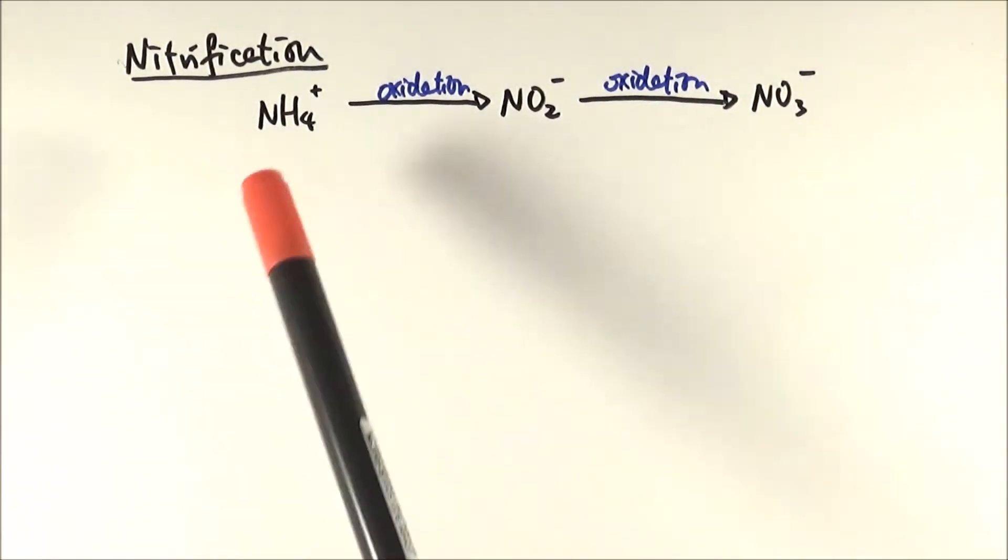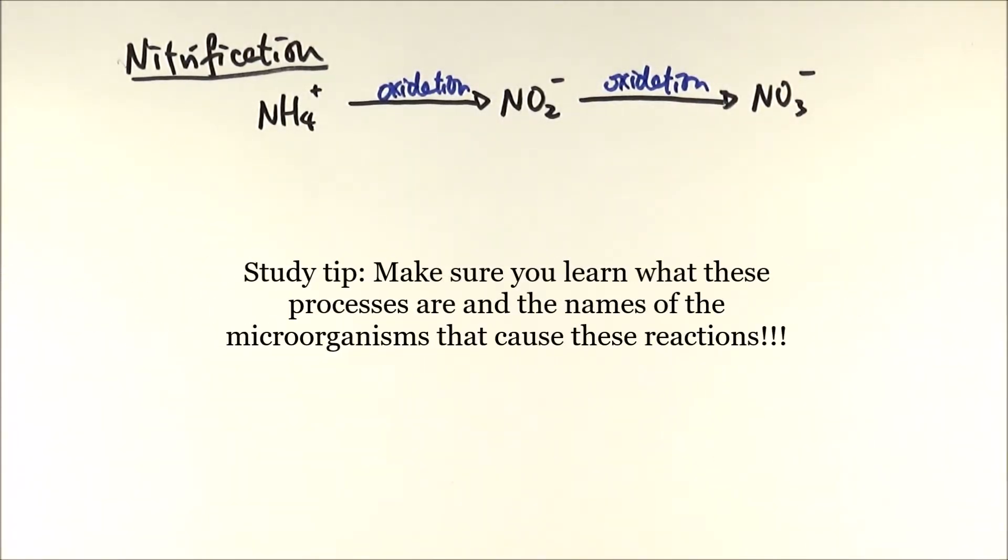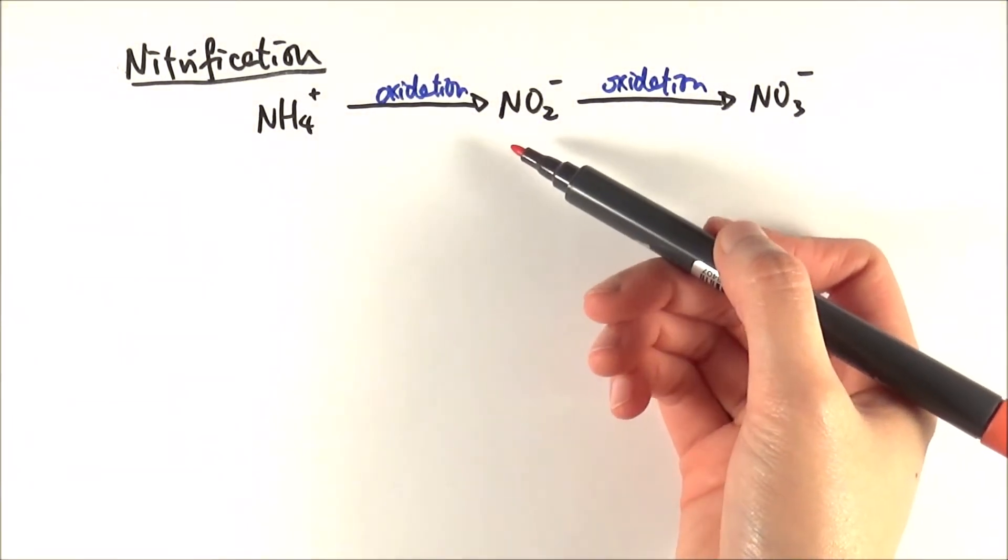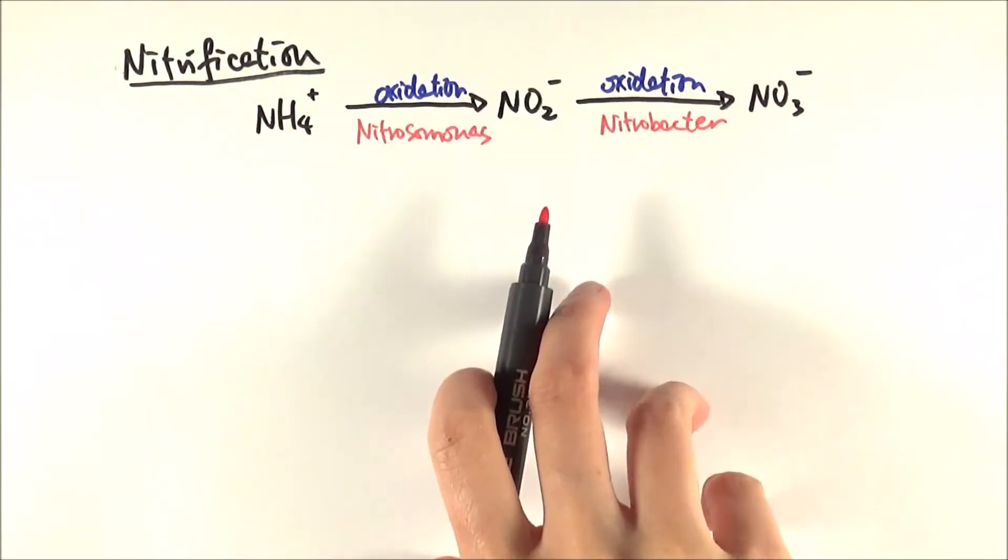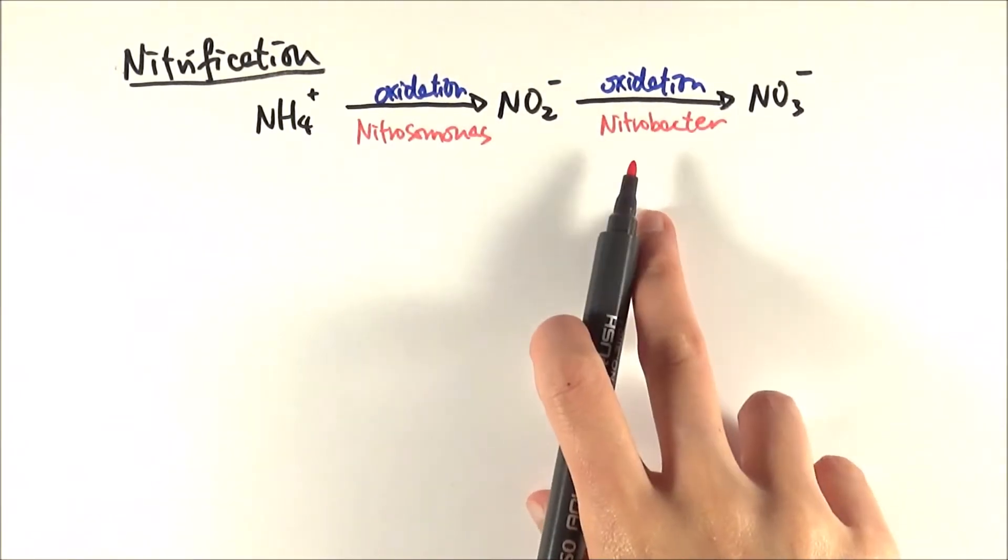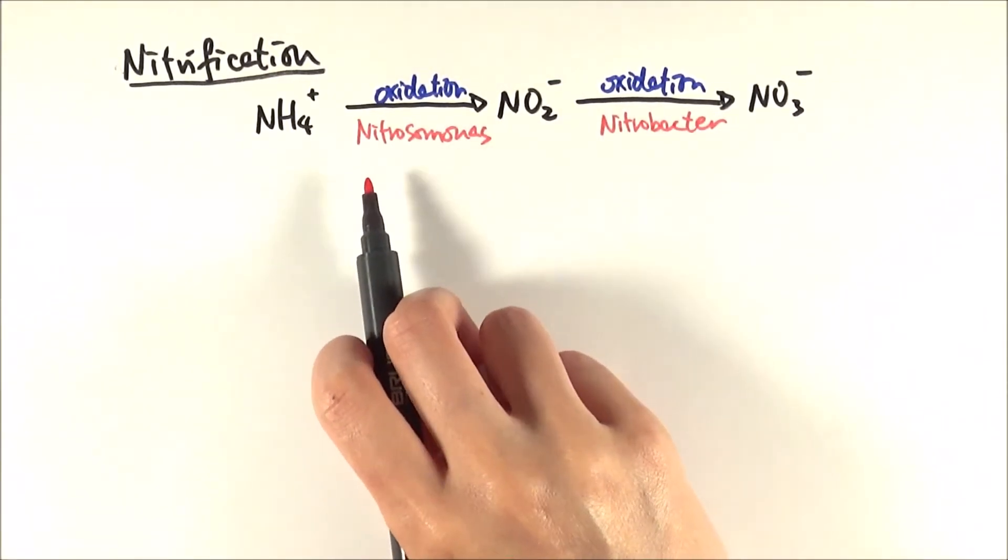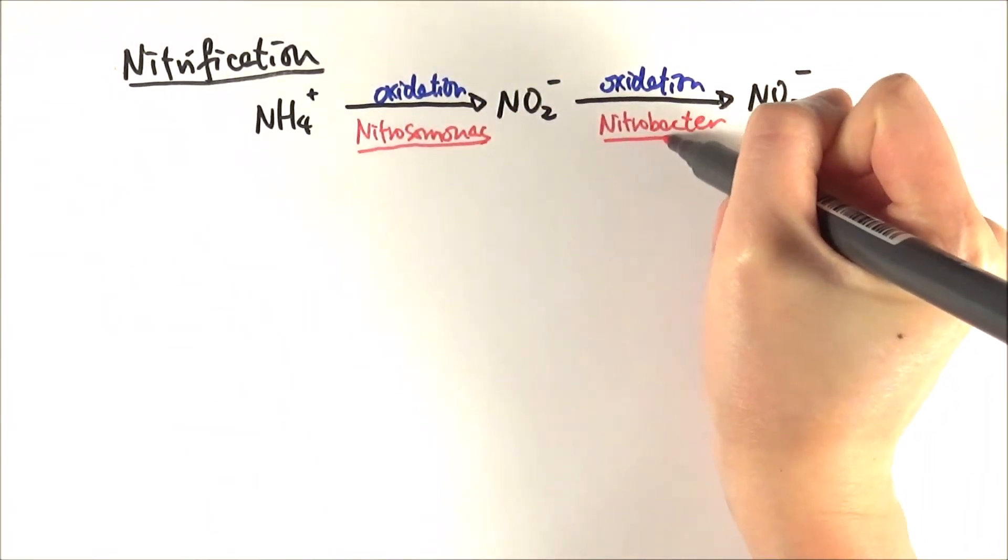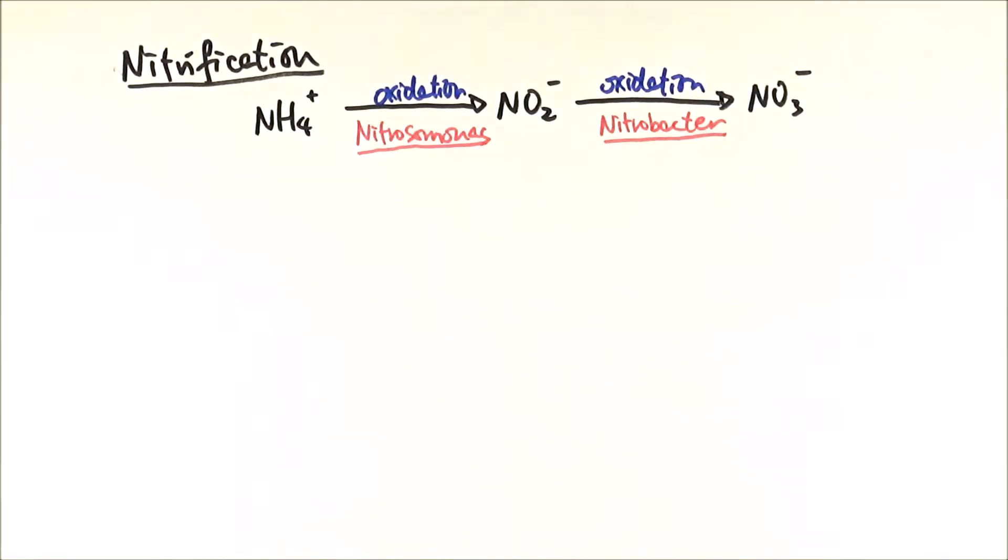In the nitrogen cycle, apart from knowing what actually happens, you also need to memorize the names of the bacteria involved in each of these stages. There's not a lot of understanding in this particular case, but it's just a matter of memorization. So the bacteria that converts ammonium to nitrite is called nitrosomonas, and the bacteria that converts nitrite to nitrate is called nitrobacter. Keeping in mind that these names are Latin names of the bacteria, so we need to make sure we underline them when you're writing it in an exam or type it in italics if you're writing on a computer.